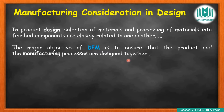By designing the product and manufacturing process together, if any mistakes are found during manufacturing that the designer made, they can be corrected. So, keeping everything in one unit and one line, this is manufacturing consideration in design.